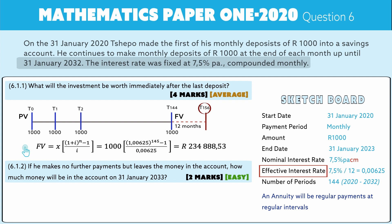Now it's no longer an annuity — it uses the compound interest formula: FV = PV × (1 + i)^n. The previous amount, 234,888.53 rand, becomes the present value. The rate stays at i = 0.00625, and n = 12 since it stays in the bank for 12 months.